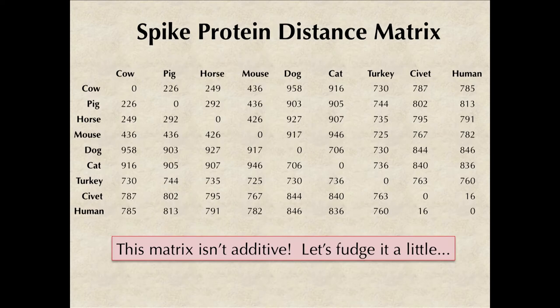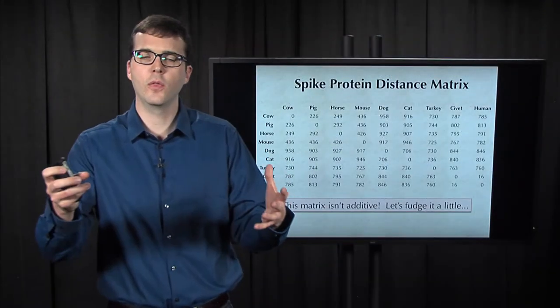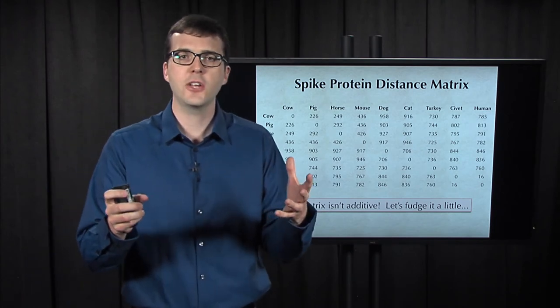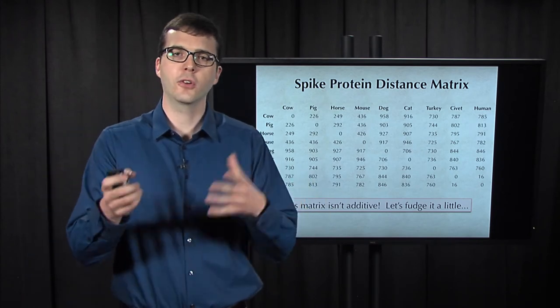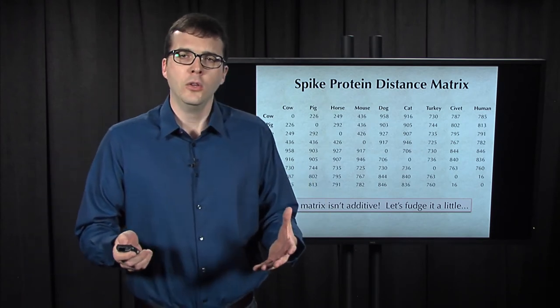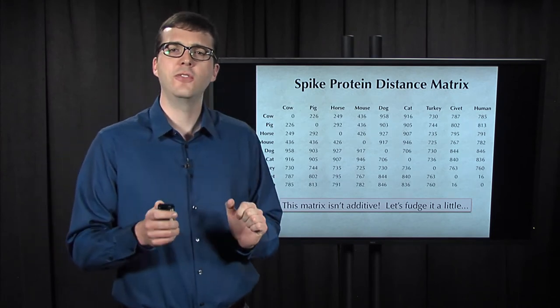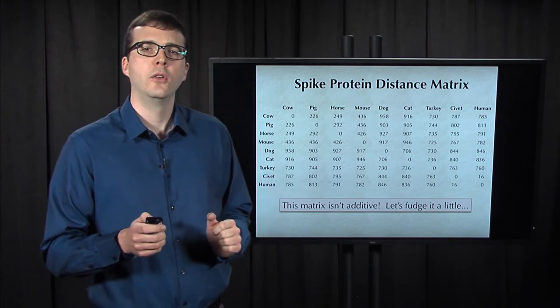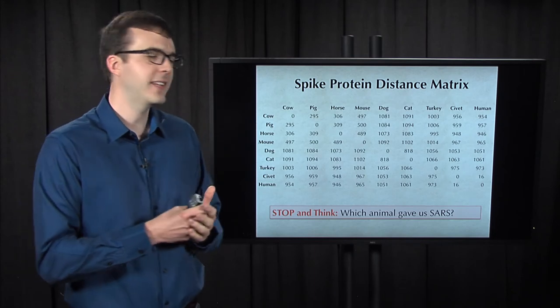Unfortunately though, when we go to apply this algorithm to the spike protein distance matrix taken from coronaviruses, we find that the matrix is not additive. That is, somewhere along the way, if you apply additive phylogeny you're going to get a negative edge weight and things are going to go wrong. So for now let's just fudge this matrix a little bit to yield the following matrix that's additive.